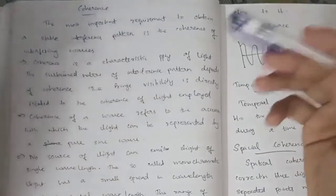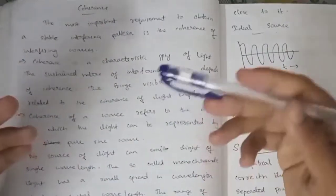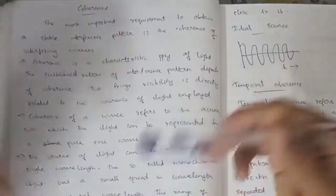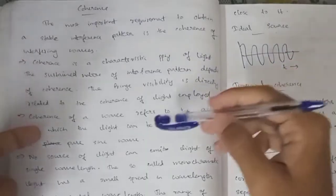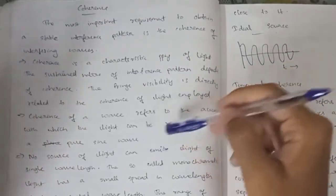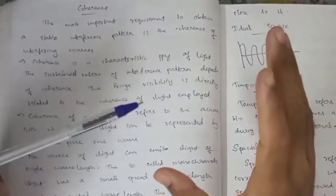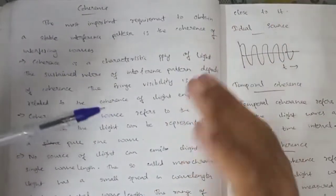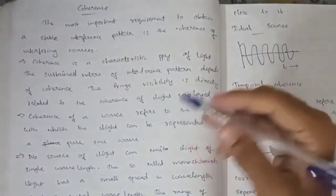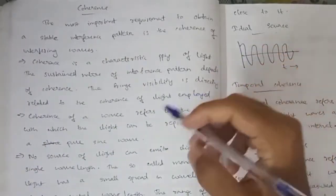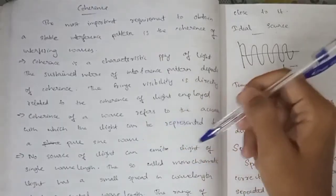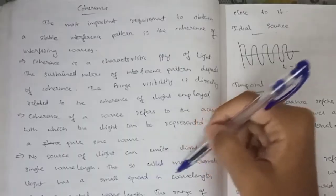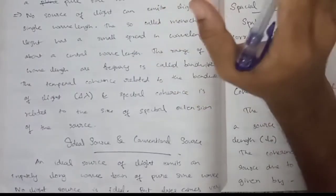Fringe visibility and quality depend on the source. The coherence of the sine wave refers to the accuracy of light that can be represented by a pure sine wave. No source of light emits light of a single wavelength. So-called monochromatic light has a small spread in wavelength around a central wavelength.